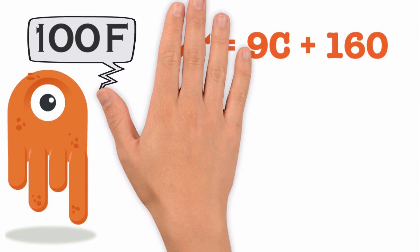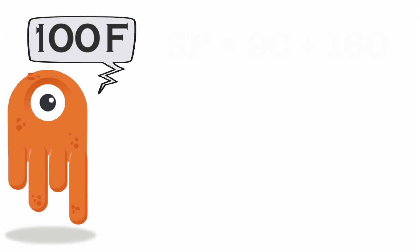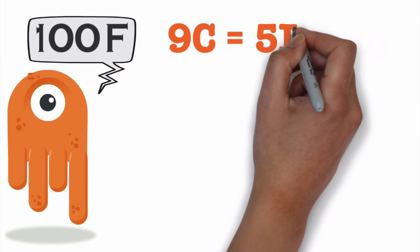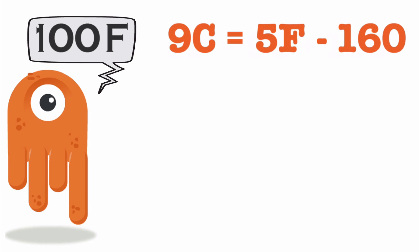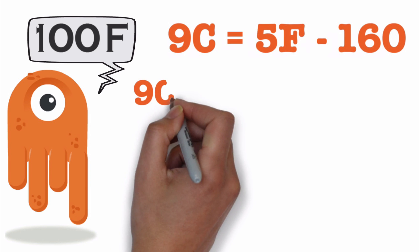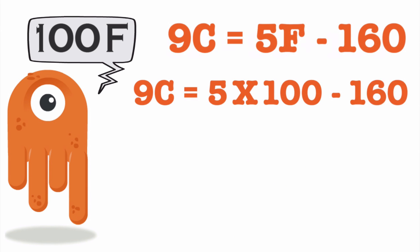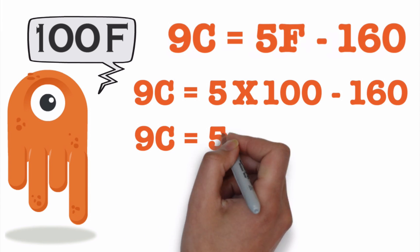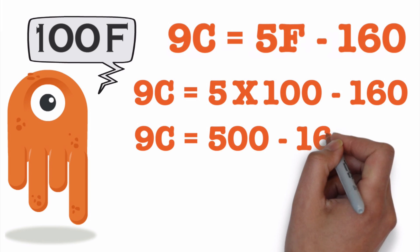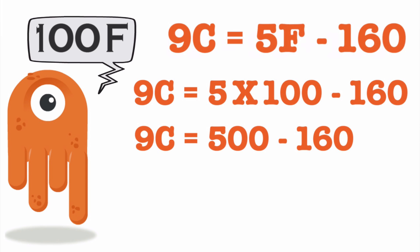Moving 160 to the other side, we get 9C equals 5F minus 160. Let's plug in the values in this formula. That gives us 9C equals 5 times 100 minus 160, or 9C equals 500 minus 160. Now 500 minus 160 equals 340.